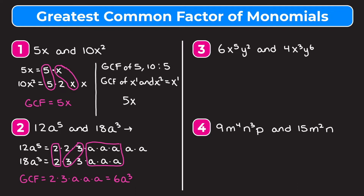Using the shortcut: the greatest common factor of 12 and 18 is 6 — the biggest number both can be divided by. Take the smaller exponent for a, which is 3, giving 6a to the third. The shortcut is definitely easier and faster, but writing out the factors helps you understand what's happening. I suggest starting with the longer method and then using the shortcut once you understand the concept.